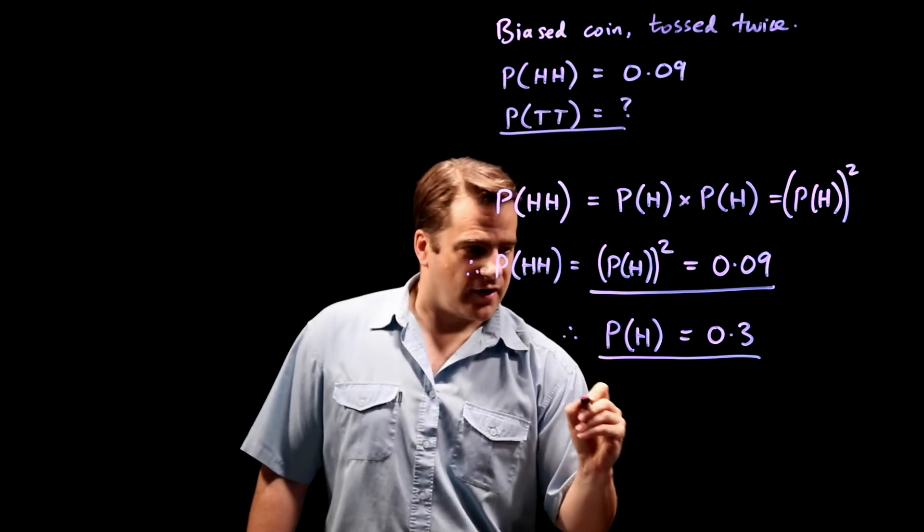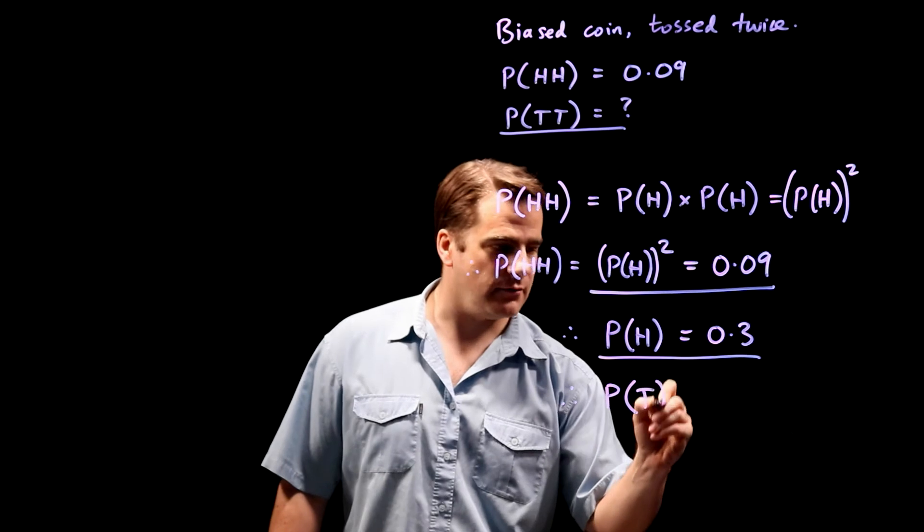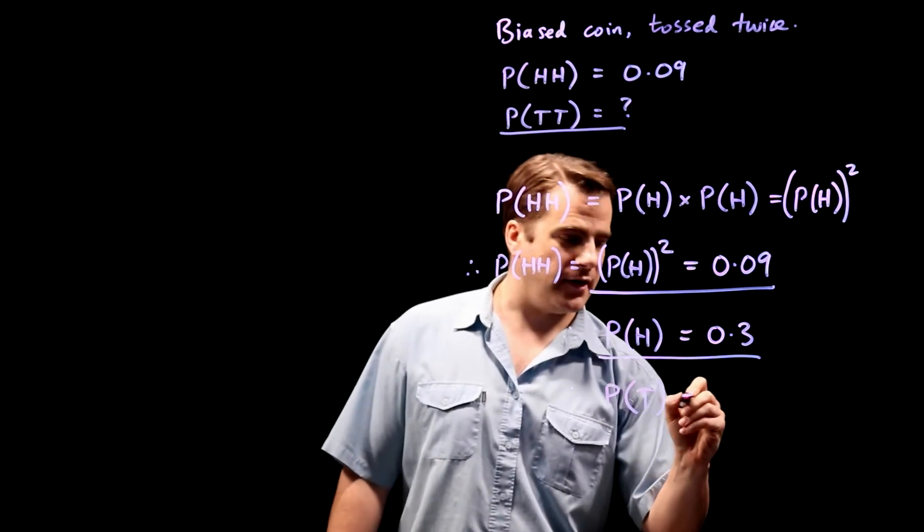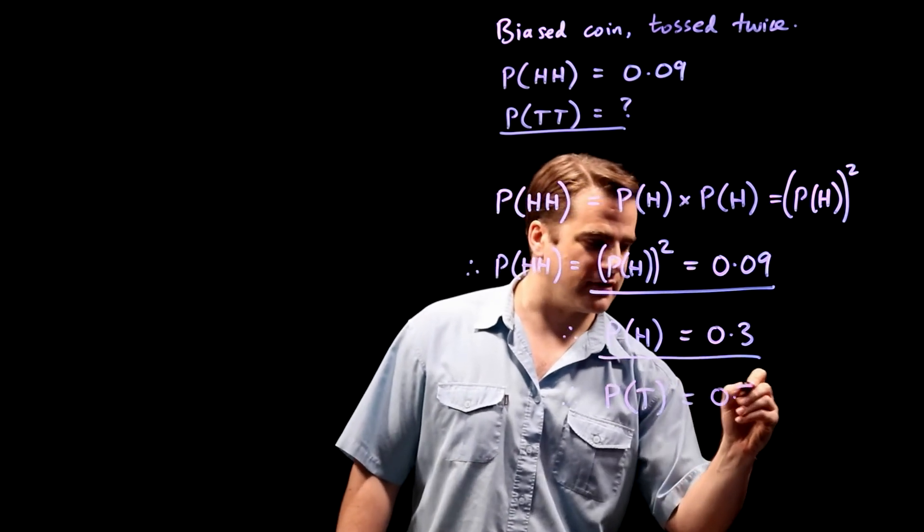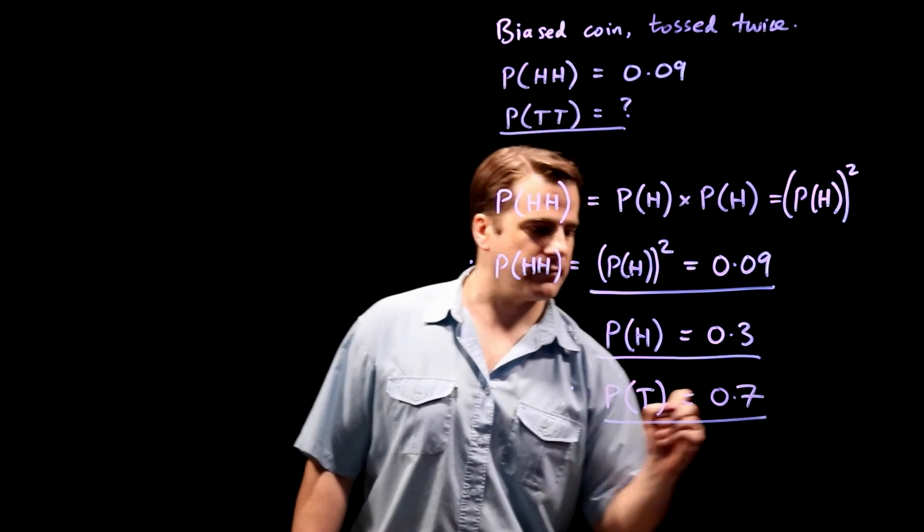It's easy from here on. You can only get heads or tails, therefore, the probability of getting a tail with a single flip must be 1 minus that, which is 0.7.